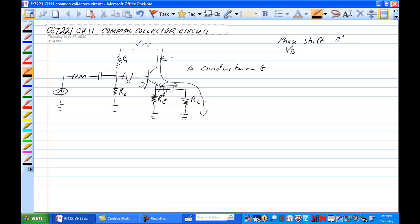The next thing to look at is the DC bias of this circuit. So we need to find out the voltage at the base. And that's basically the same as the common emitter circuit: VCC times R2 over R1 plus R2. And that would give us the voltage of the base.